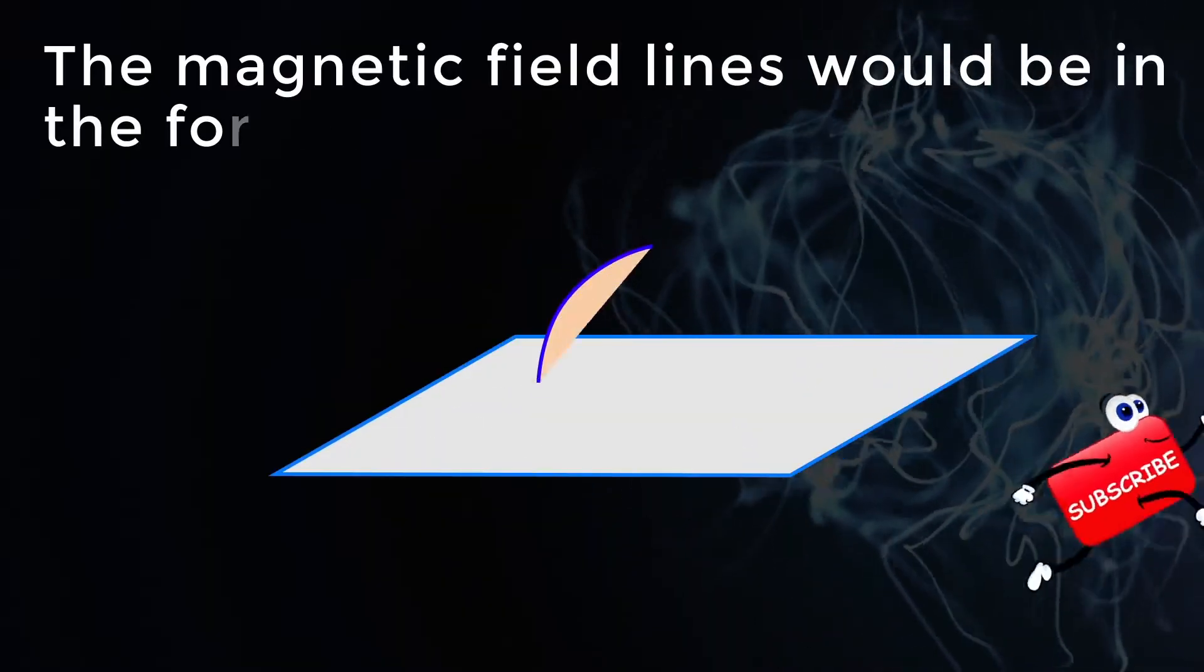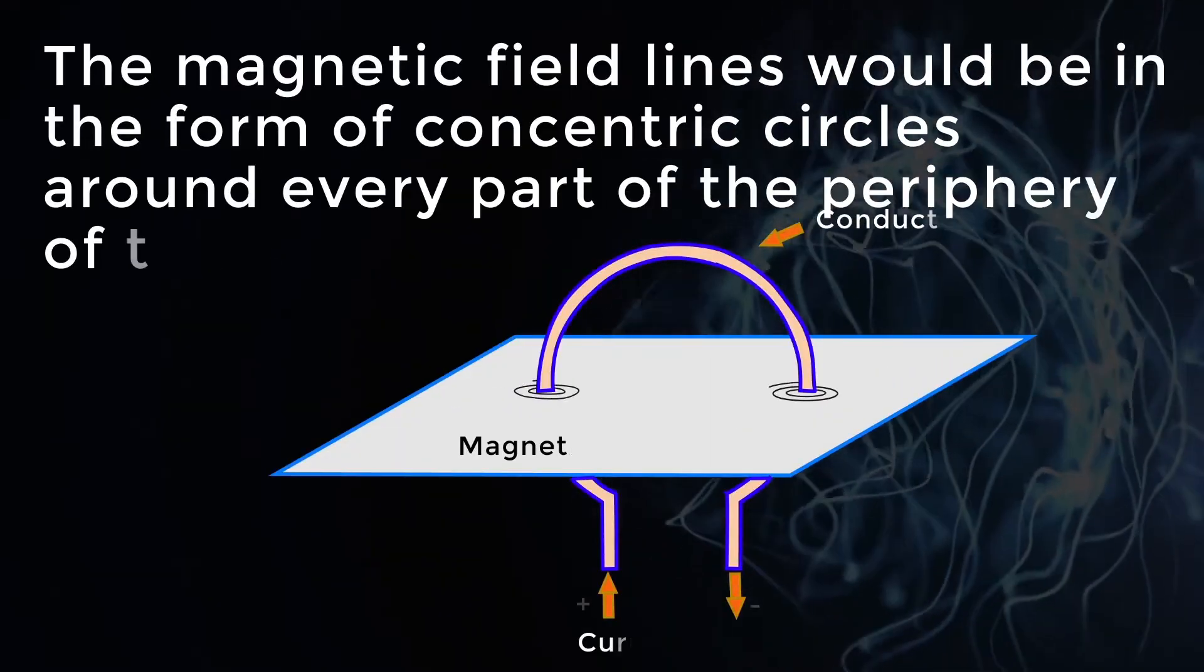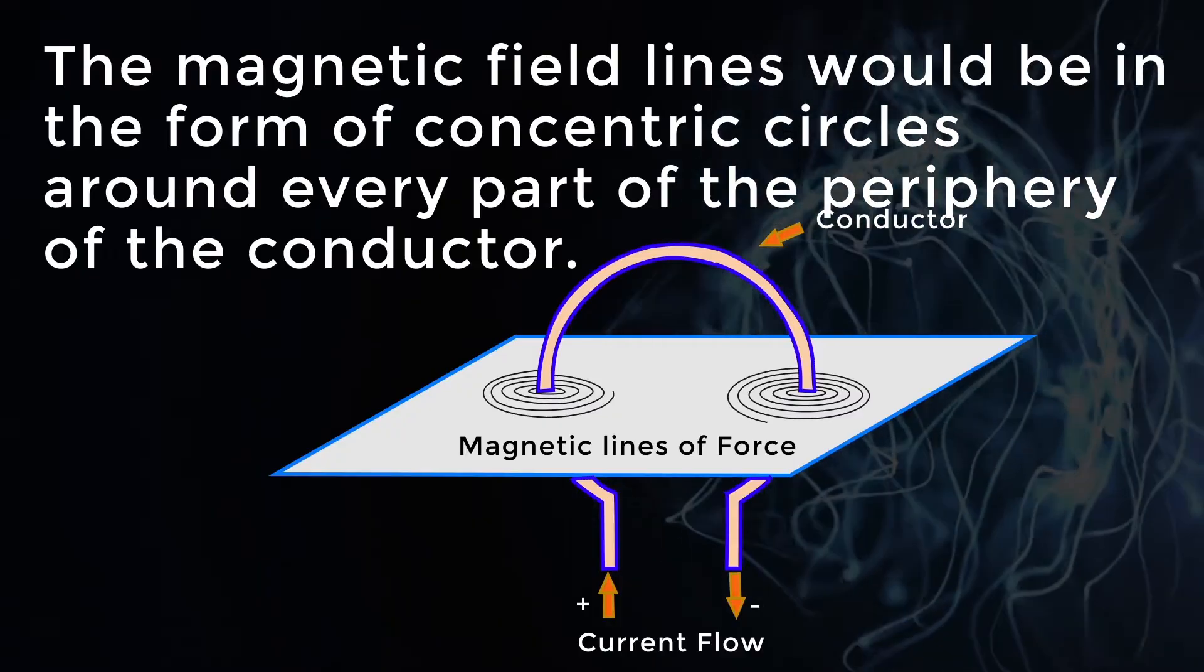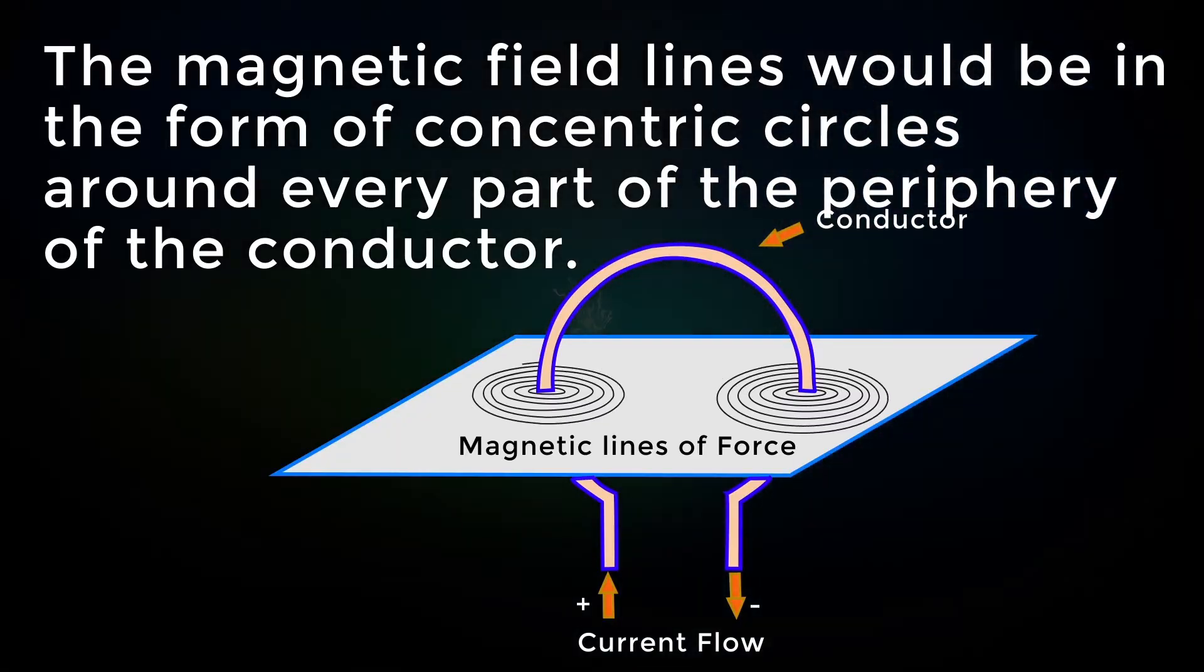In case of circular carrying conductor, the magnetic field lines would be in the form of concentric circles around every part of the periphery of the conductor.